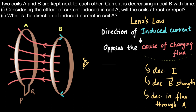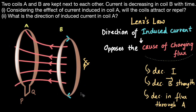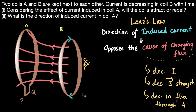Coil A doesn't want the flux passing through it to decrease — it wants to oppose that. To oppose the decreasing flux, it must increase the flux. Now, if we move coil B away from coil A, the strength of the magnetic field lines passing through coil A decreases, which means the flux through coil A is also decreasing. But coil A doesn't want that; it wants to increase the flux.